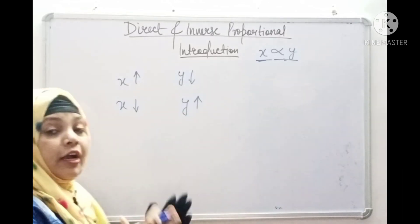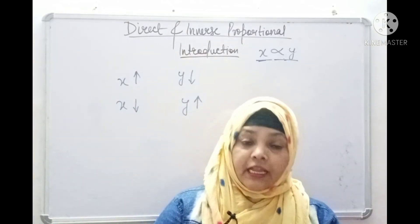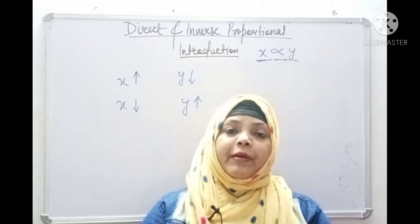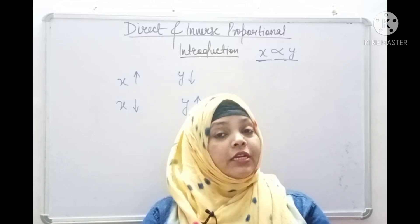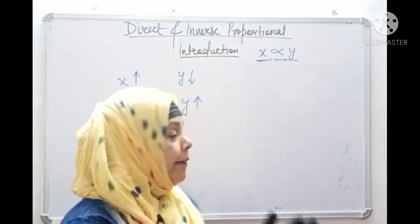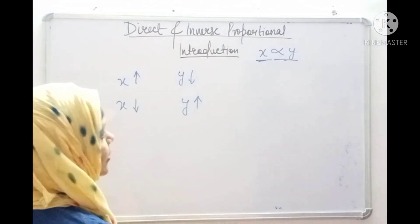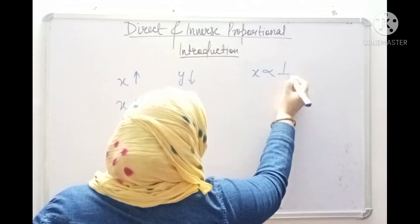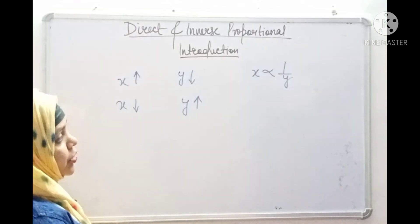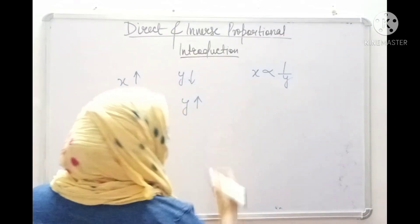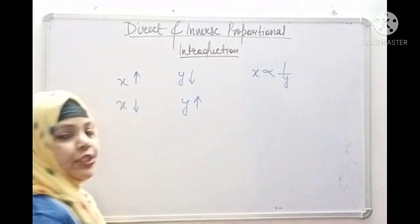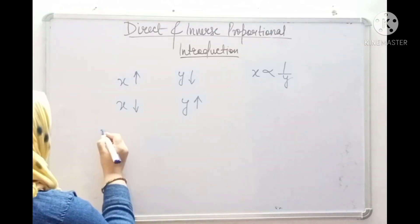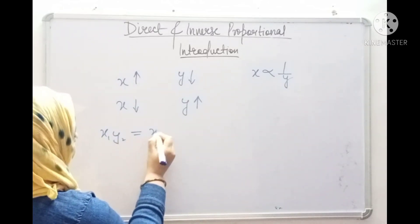So this is what happens in inverse proportion. Inverse proportion is denoted as: x is inversely proportional to y. If x is increasing, y is decreasing. If x is decreasing, y is increasing. And we represent inverse proportion as x1 times y1 equals x2 times y2.